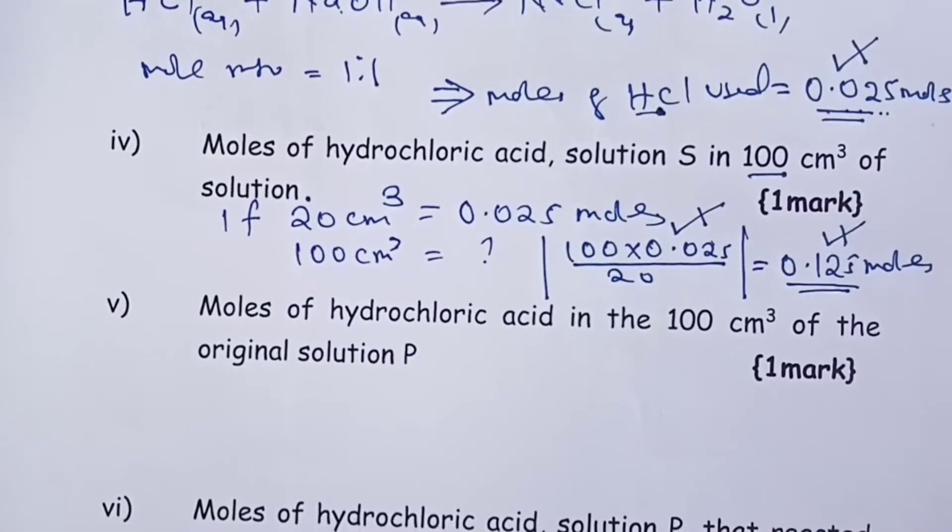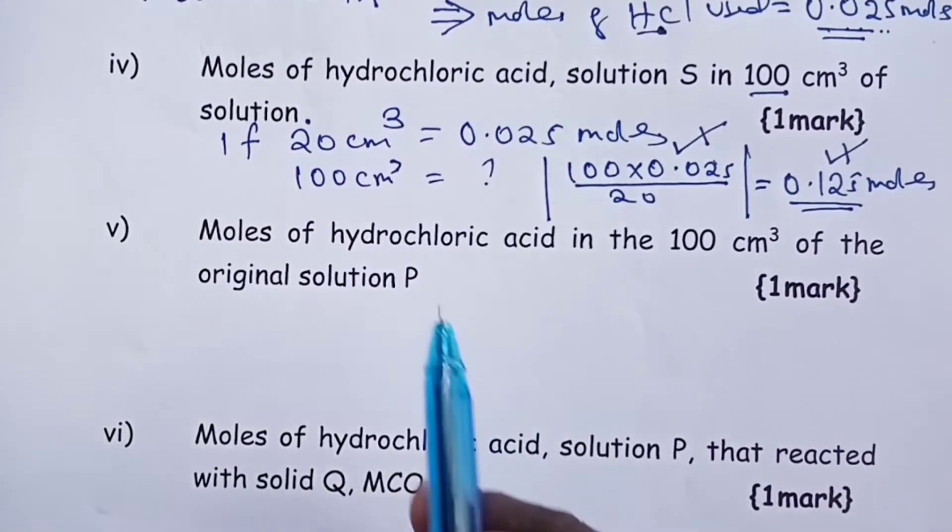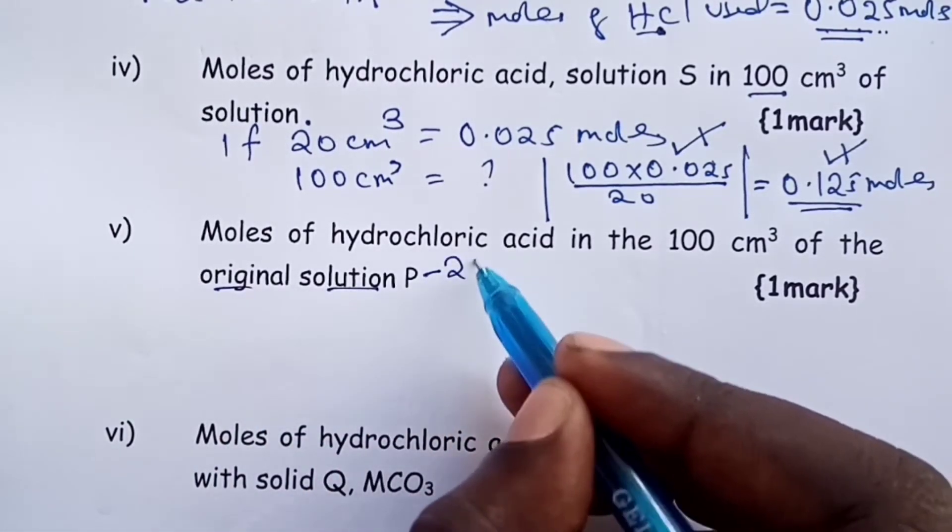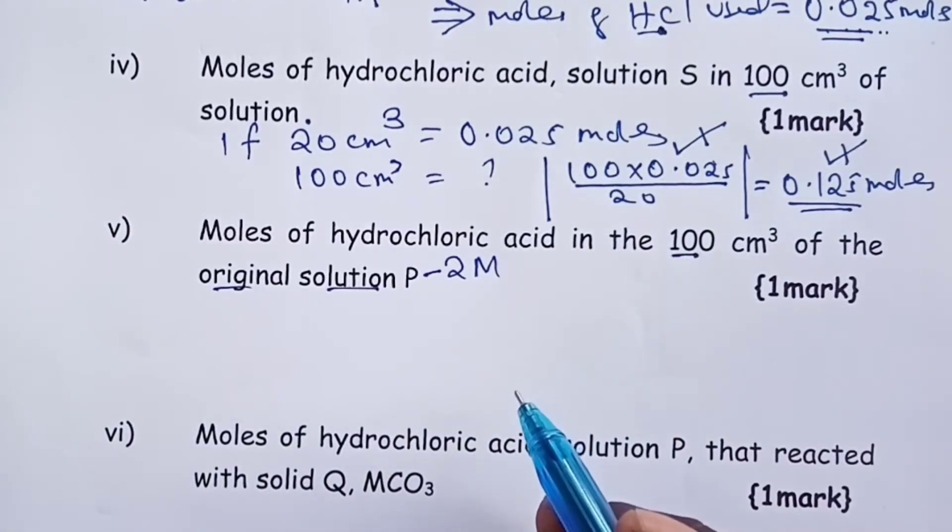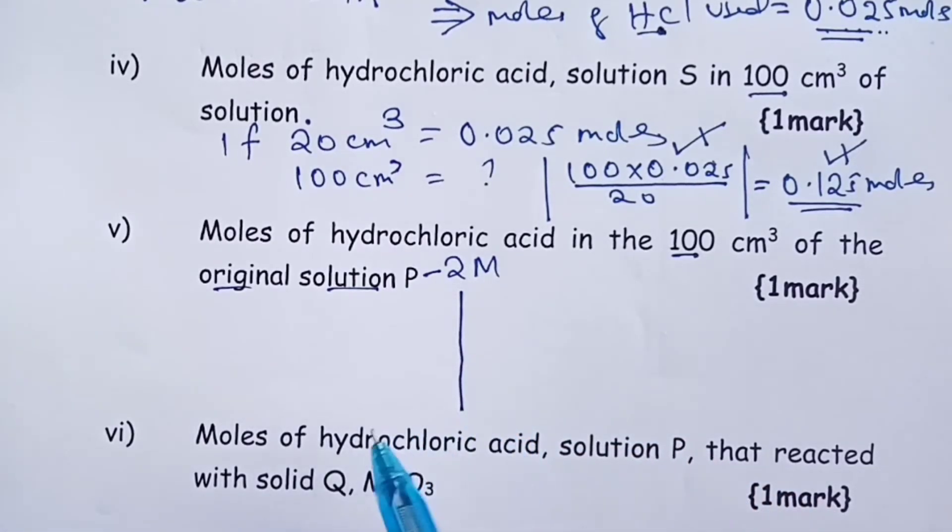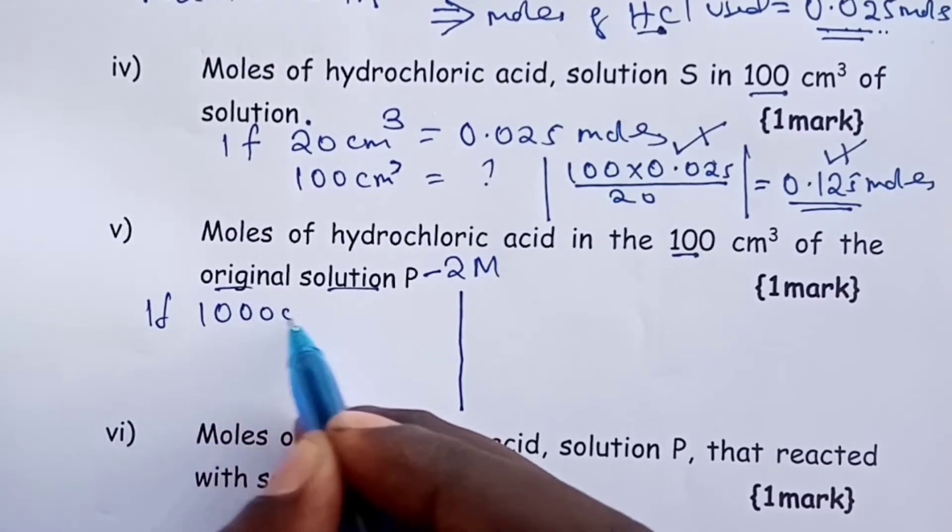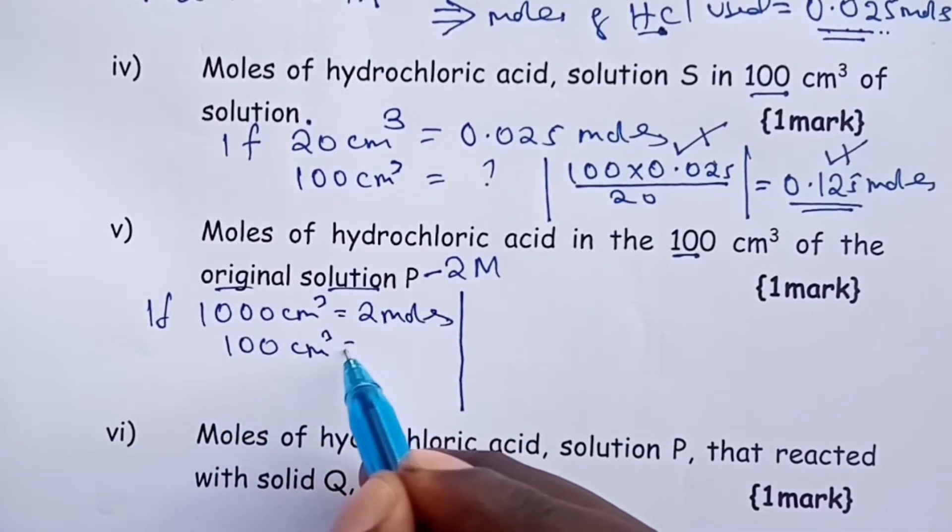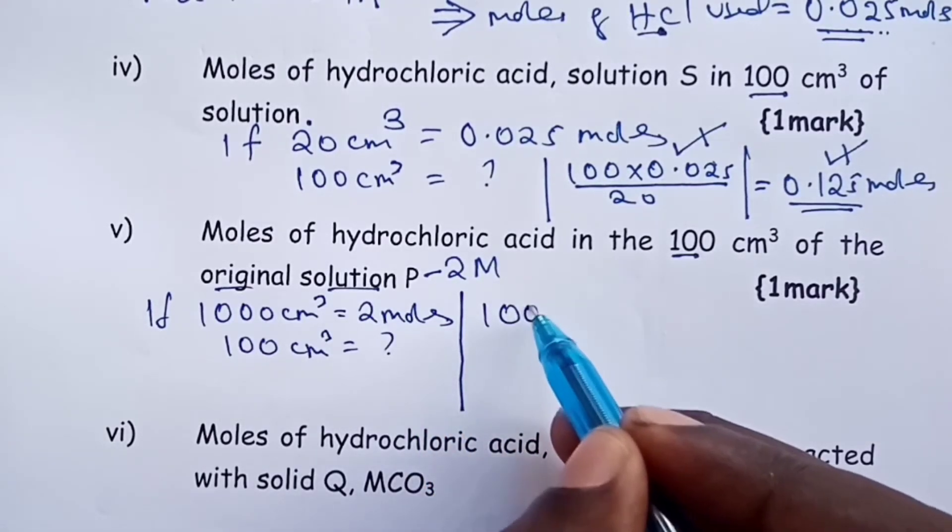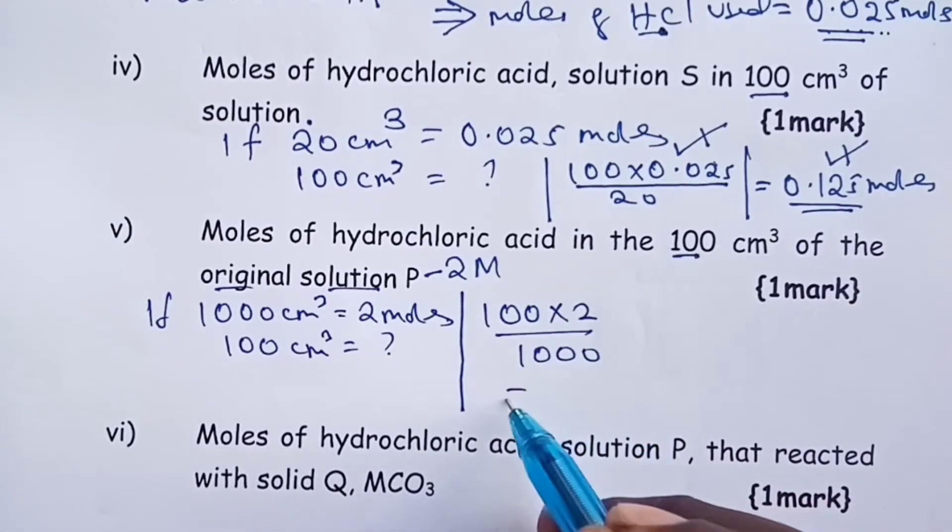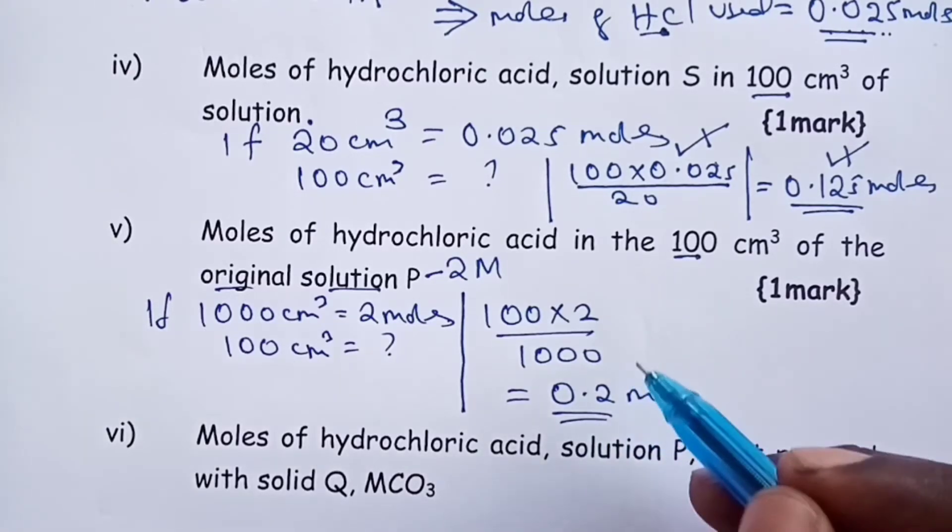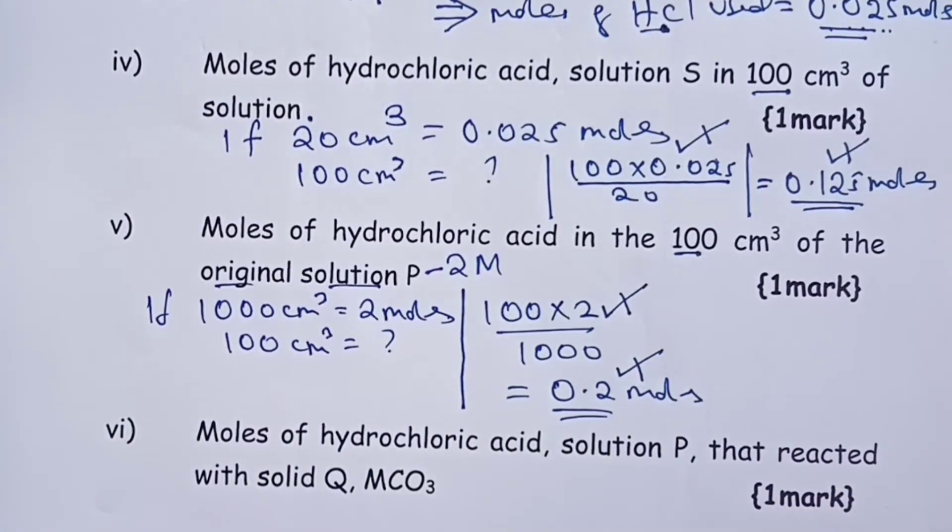Now, we move on to question number 5. Moles of hydrochloric acid in the original solution P. Remember, solution P was 2 molar, but we only picked 100 of it to react with our MCO3. So, this is a very easy question to get. In 1 liter of solution, we have 2 moles of hydrochloric acid, but we only used 100. So, if you do cross multiplication, you have 100 multiplied by 2 divided by 1000, and we get 0.2 moles. That's those of P that were originally present in 100 cubic centimeters. So, a half again for the final answer, a half for the working.